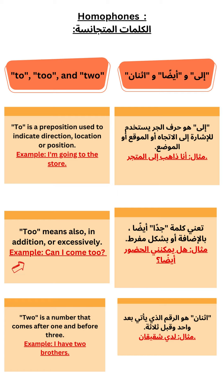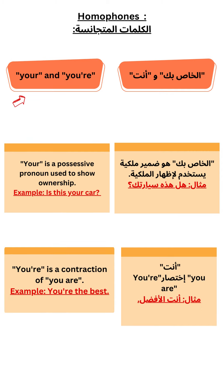'Too' means also, in addition, or excessively. Example: Can I come too? 'Two' is a number that comes after one and before three. Example: I have two brothers.